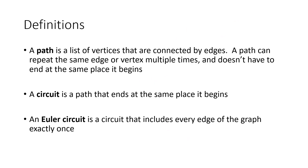A path is a list of vertices that are connected by edges. A path can repeat the same edge or vertex multiple times, and it doesn't have to end at the same place it begins. In the parking meter problem, we want to find a way to walk up and down our streets while checking all the parking meters. So instead of giving ambiguous directions, we say: go from point A to point B, then B to C, then C to D. That list of vertices tells us how to walk the streets.